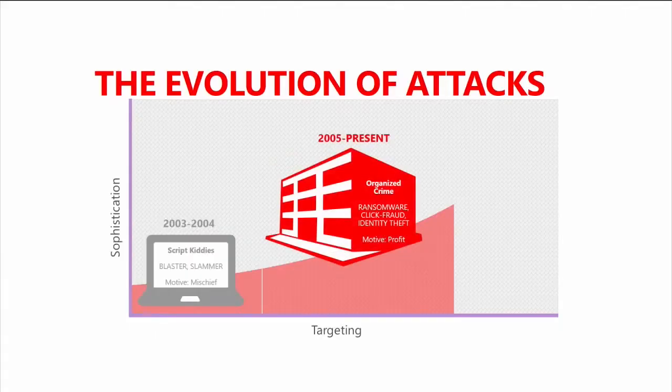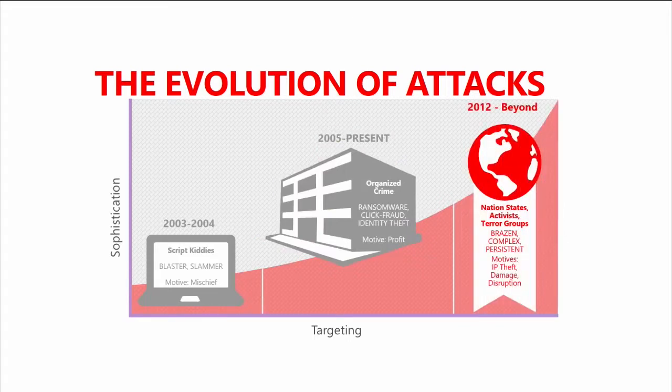Things are changing as cybercrime is no longer a hobby. In 2003, script kiddies with Metasploit or Kali thought they were hackers — the volume was high but the impact was low. By 2005, hackers started to organize crime and target their attacks. After 2012, nation states, activists, and terror groups started becoming really effective, and the impact started to be high as well.